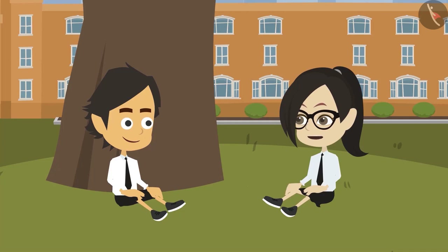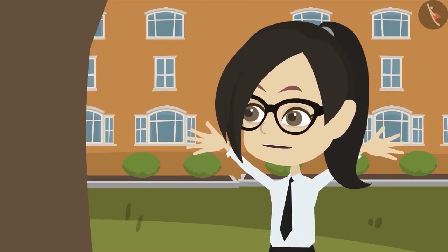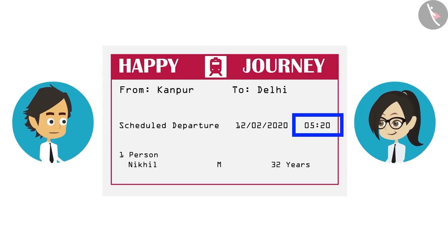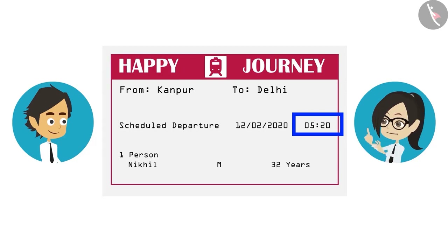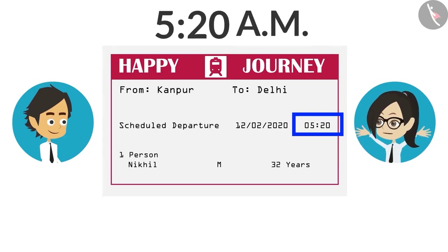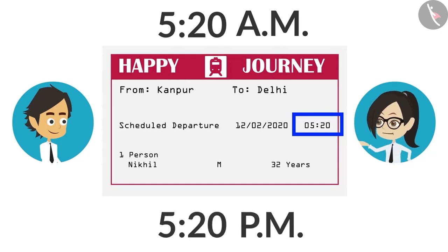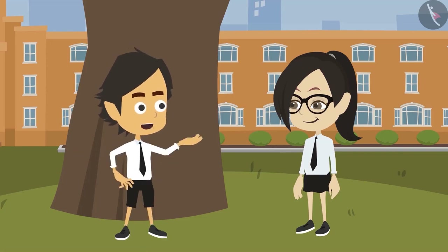What time was written on his ticket? 20 minutes past 5 o'clock. But what was written in front of the time — AM or PM? Nothing like that was written; only 20 minutes past 5 o'clock was written. That means the time was written in the 24-hour format! In the 24-hour format, 20 minutes past 5 means 5:20 in the morning. He arrived at 5:20 in the evening, and the train had already left in the morning. Absolutely correct, Vandana!